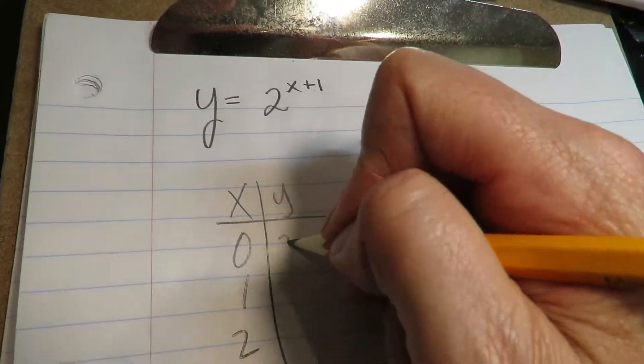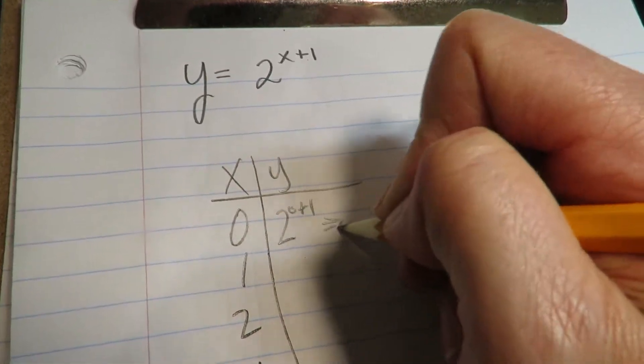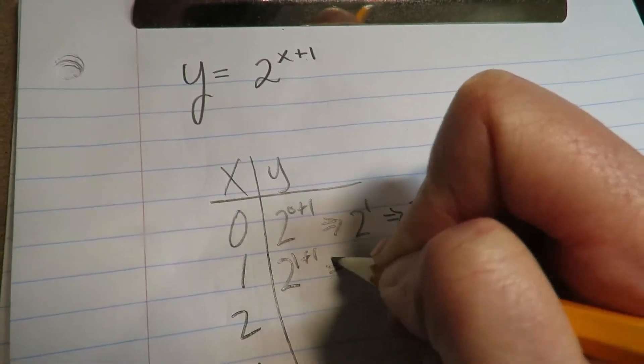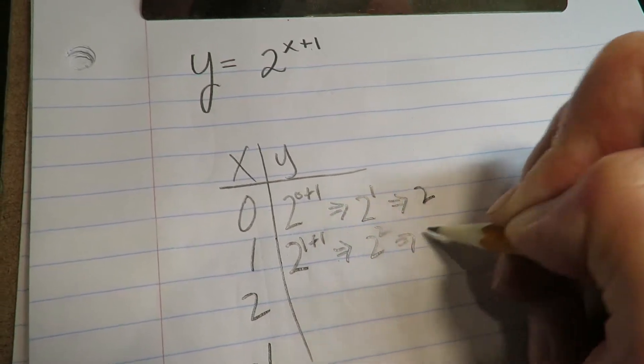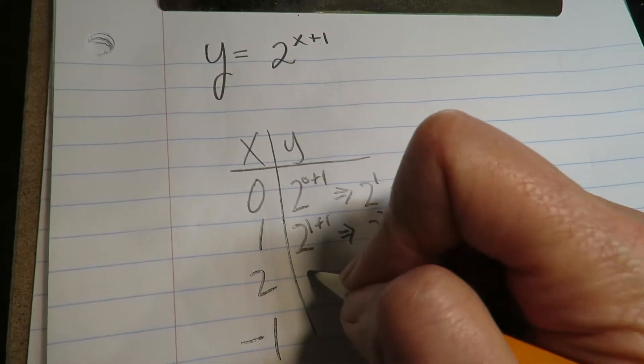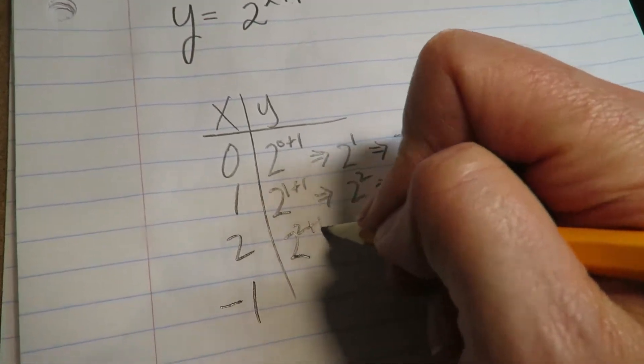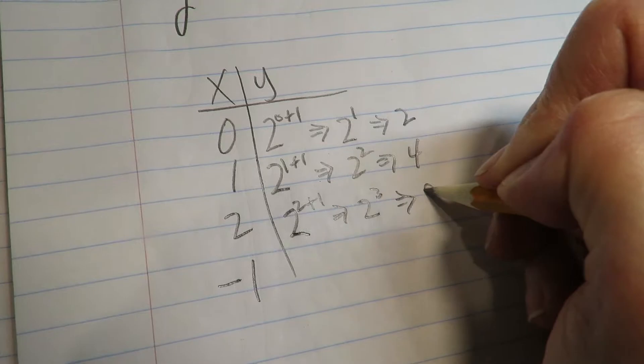All right, so if we plug in zero, it's two to the zero plus one, which is two to the one, which is two. If we put in a one, it's one plus one, which is two to the two, which is four. If we put in a two, it's two plus one, which is two to the third, which is eight.